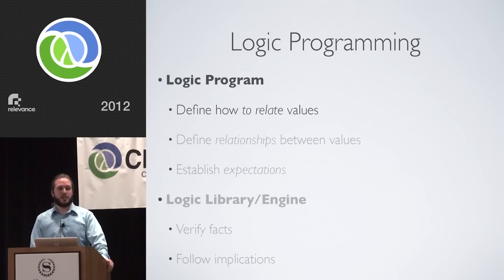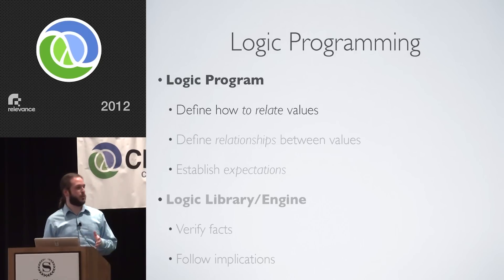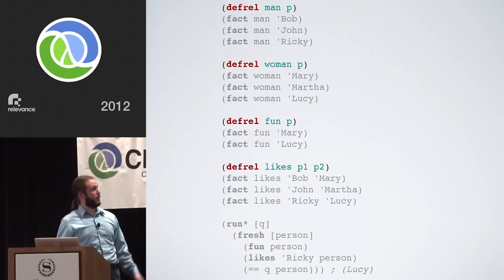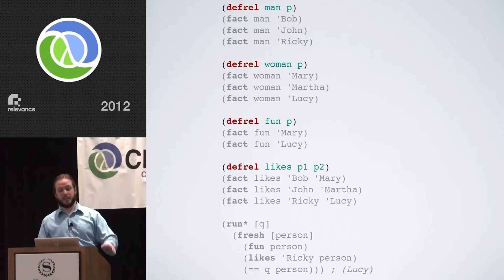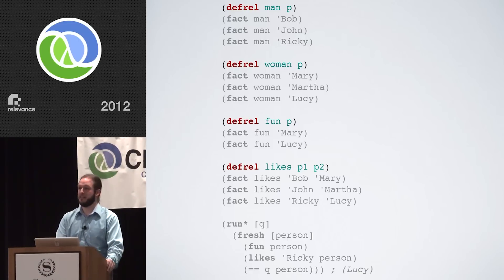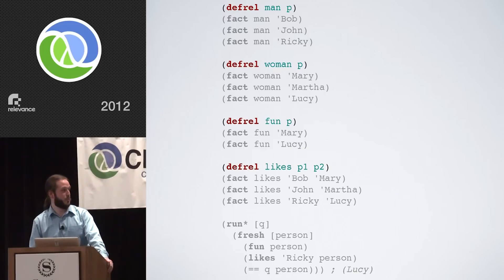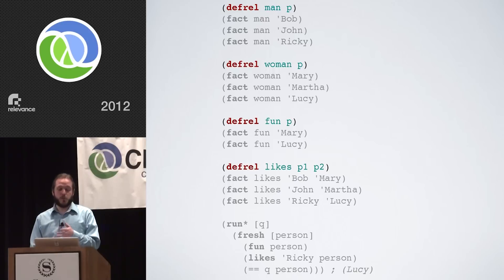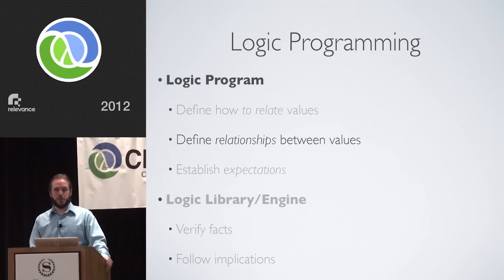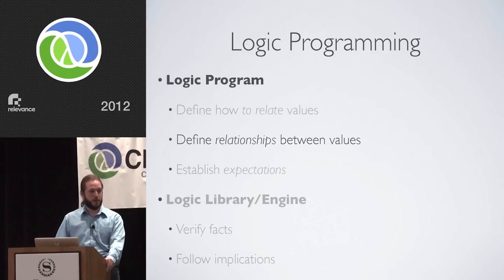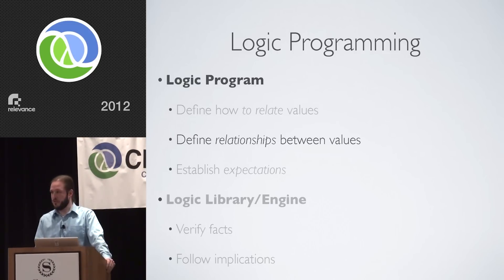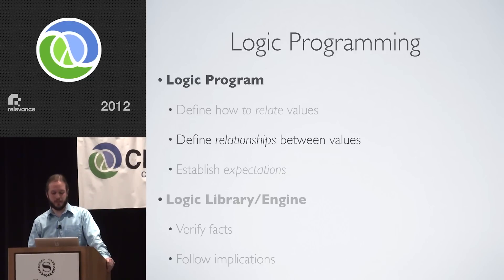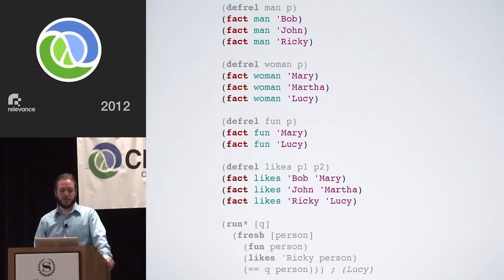Once we have that vocabulary in place, we can establish the actual relationships that we're going to be dealing with. In this case, we're going to hard-code some values. We have some men, women. Mary and Lucy are both fun. Nobody else is. Bob likes Mary, John likes Martha, and Ricky likes Lucy. Once we have both the vocabulary for defining relationships and the actual data, we need to do something with that. That's where the really interesting part of logic programming comes in, and that is to establish expectations — our first cue over to the testing vocabulary, making assertions, adding constraints. The run form at the bottom is our query.